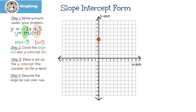Now we need to rewrite the slope as rise over run. The slope is rise over run, so that ends up being negative 3 over 1. Remember, if we have a whole number, we always write it over 1. The negative 3 tells us that we're going to go down 3 — we're going to go in the negative direction. Even though it's rise, we're going to go down. The 1, since it's positive, tells us we're going to go right, in the positive direction.